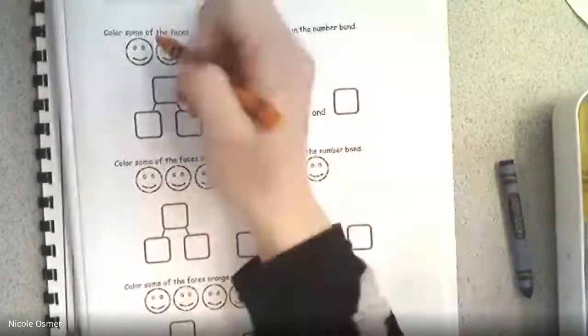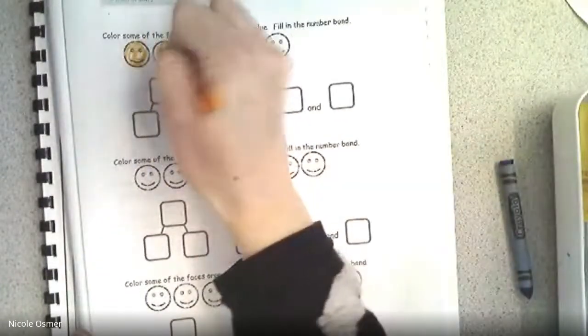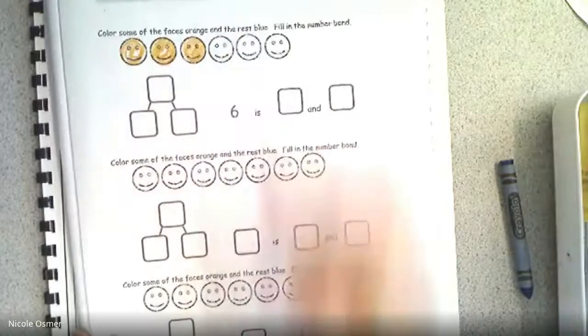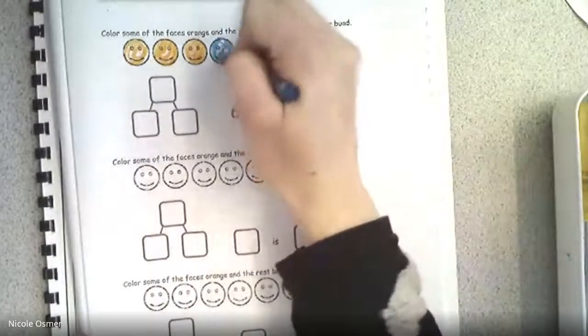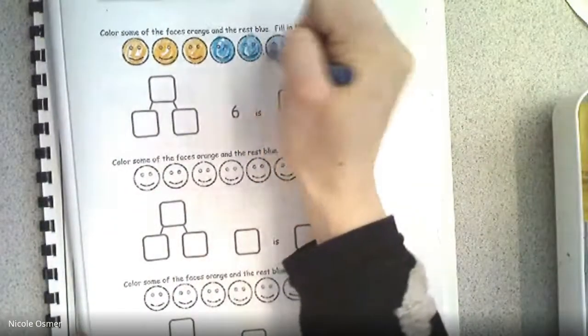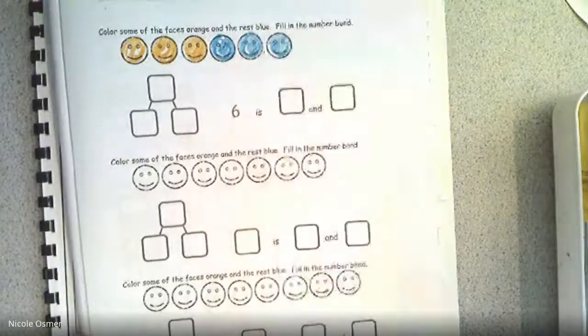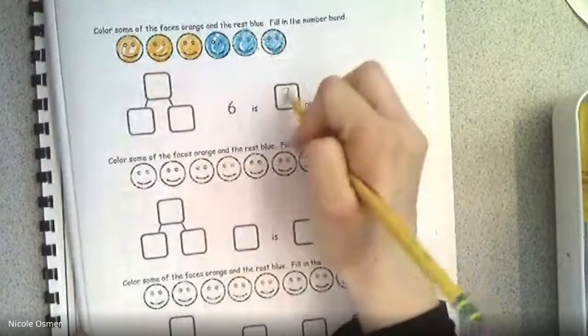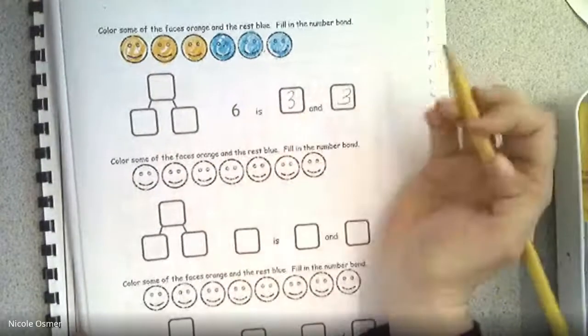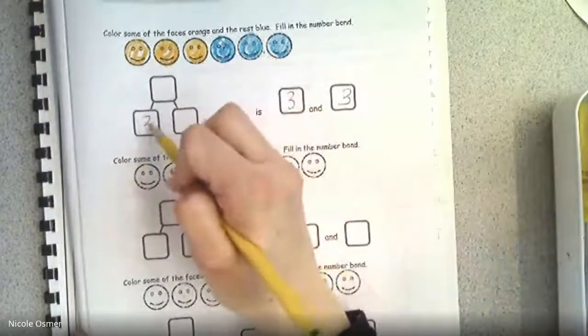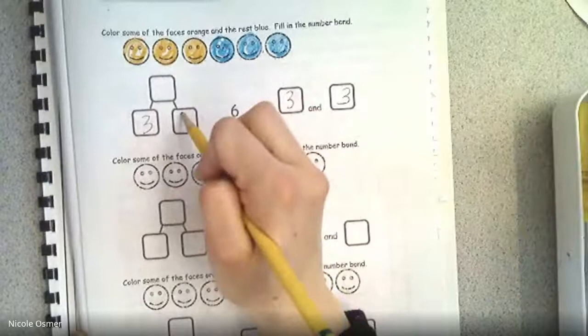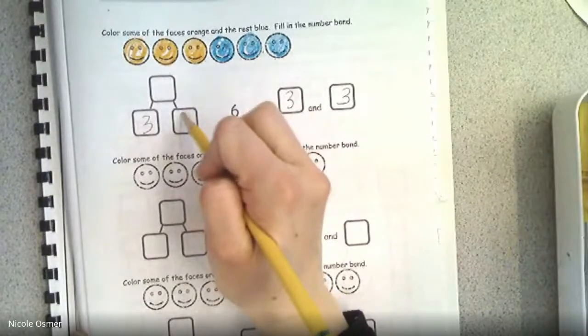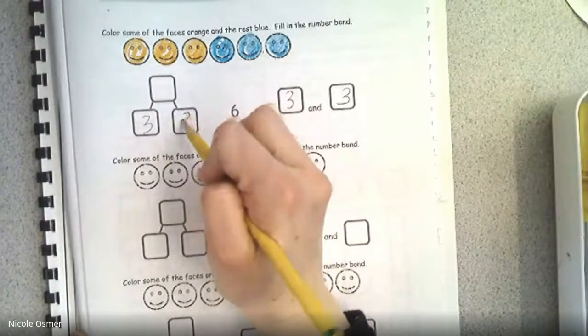So I'm going to do three orange and three blue. Six is three and three. And then I'm going to fill in the number bond. Three orange, three blue equals six. Check, check.